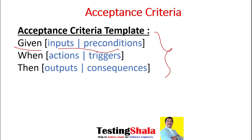After providing these inputs and preconditions, 'When' a certain action happens or is triggered, 'Then' we will get certain outputs or consequences. That is how the acceptance criteria template looks.